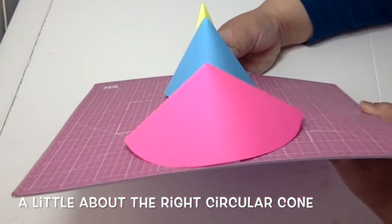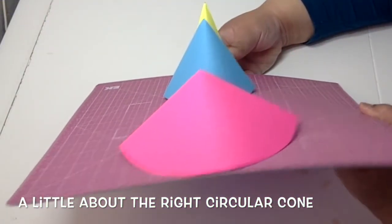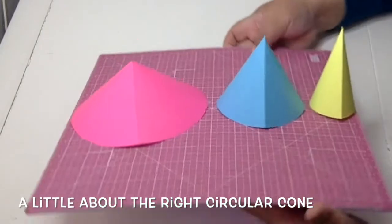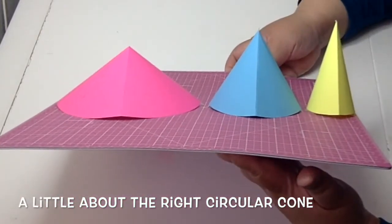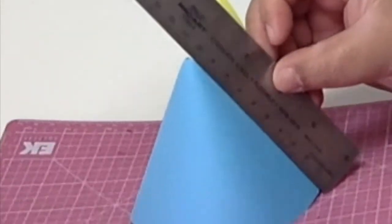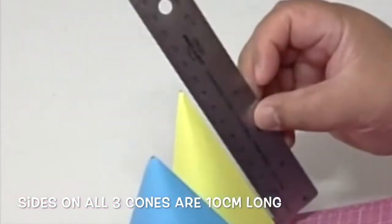Here are three cones of various sizes, but when measured, the sides are all the same length at 10 centimeters. The height is really due to the angle of the apex.